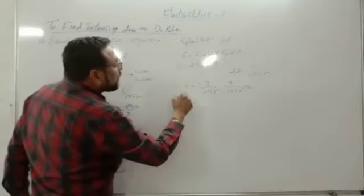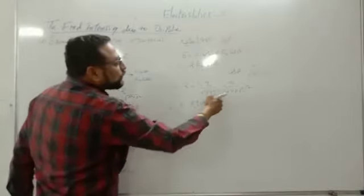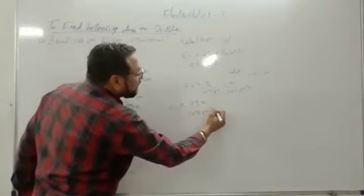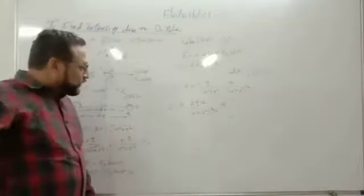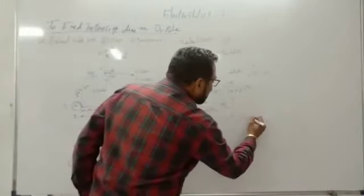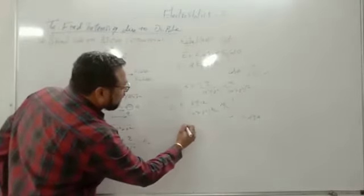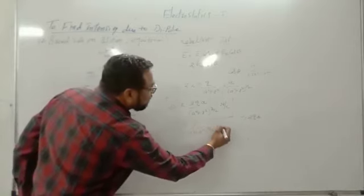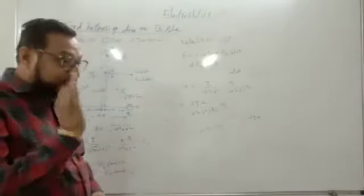E equals k times 2QA divided by (A² + R²) to the power 3/2, in Newton per Coulomb. We know that 2QA is P, the dipole moment. So E equals kP/(A² + R²)^(3/2) Newton per Coulomb.